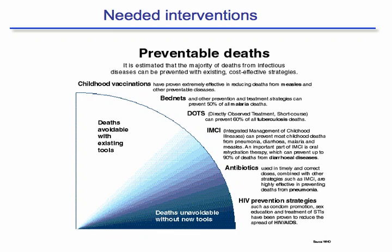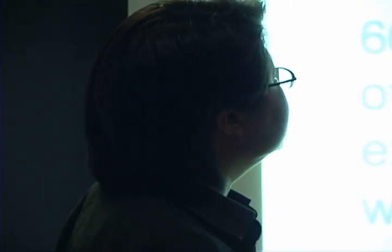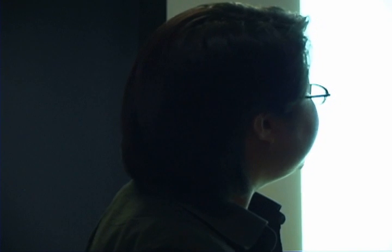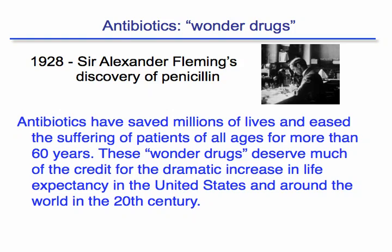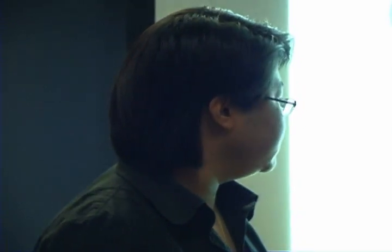If I suggest the majority of these are preventable, what are the options? We know childhood vaccinations work for a lot of things, bed nets, directly observed therapy for things like TB, and of course antibiotics — they obviously play a critical role. Starting back in 1928 with Sir Alexander Fleming's discovery of penicillin, antibiotics have saved millions of lives and eased the suffering of patients of all ages for more than 60 years, deserving much of the credit for the dramatic increase in life expectancy in the 20th century.